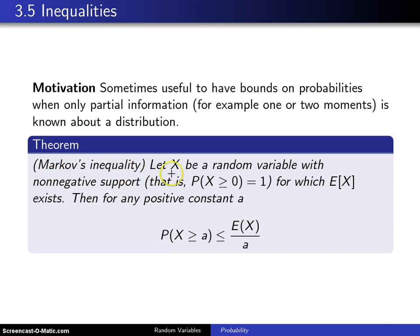Here is Markov's inequality. Let X be a random variable with non-negative support — that is, the probability that X is greater than or equal to zero equals one. There are plenty of random variables with support like this. For example, the time between arrivals to a queue has to be greater than or equal to zero. As a second example, consider the lifetime of a person, a building, an automobile, or a manufactured item — you will always have a non-negative lifetime. So even though this is a restriction, there are plenty of things that satisfy it.